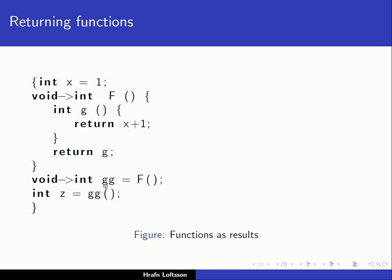In the main program, we declare a variable gg that is of the type void to int, and we initialize gg with the result of the function call to f. So we call f, and what do we get back? We get back a function — we call it gg — and that function doesn't take anything as input but returns an integer. Finally, we call gg and we get back an integer because gg doesn't take anything as input but returns an integer. This is, in our pseudo language, the syntax of declaring a function that returns another function.